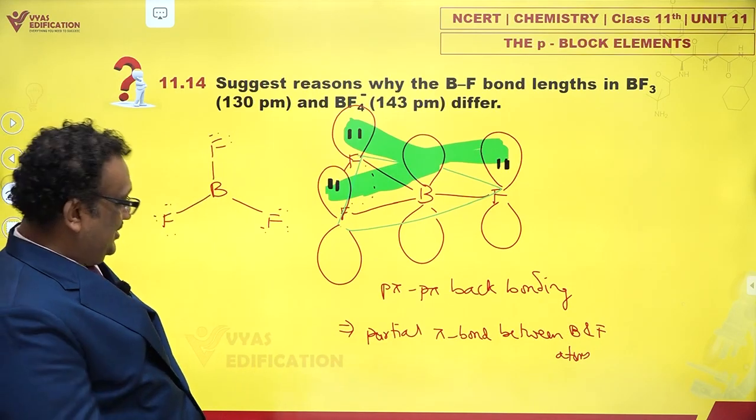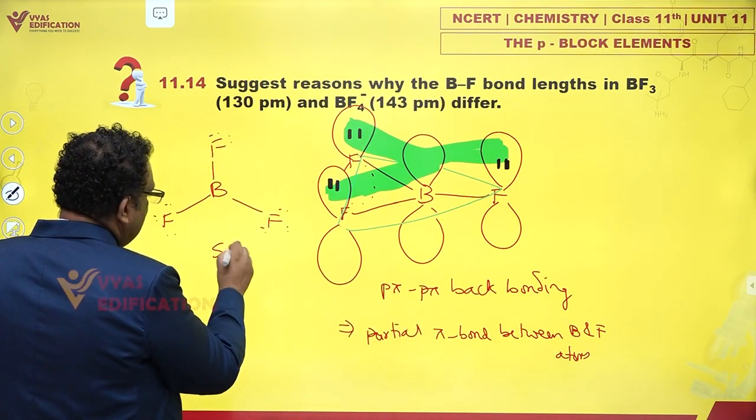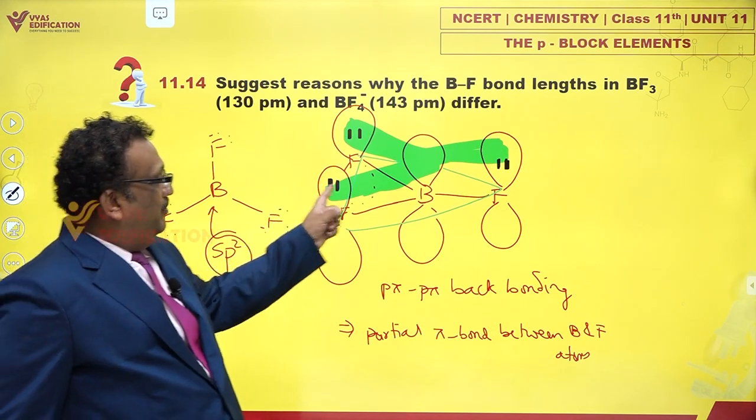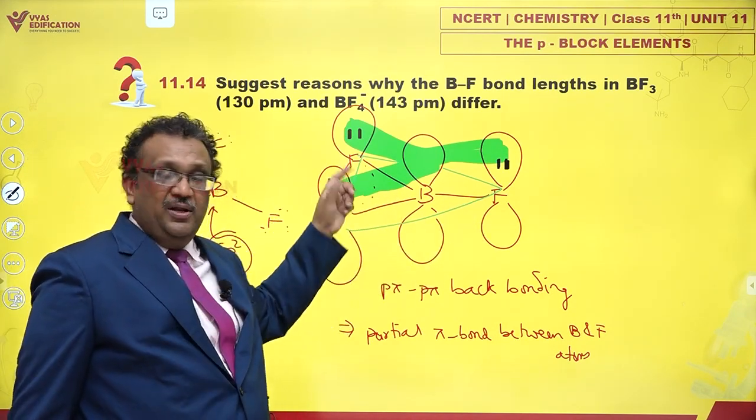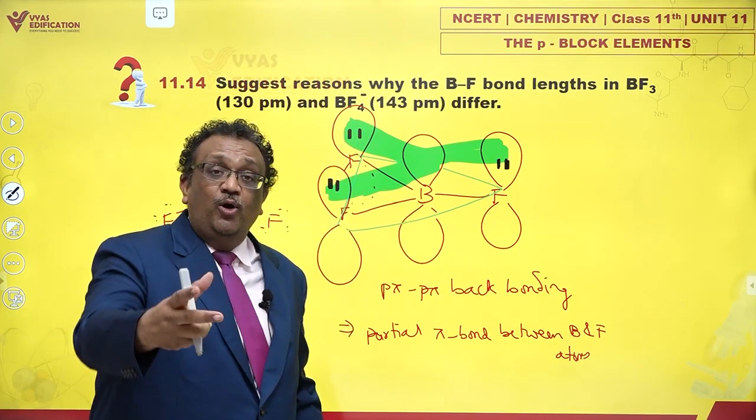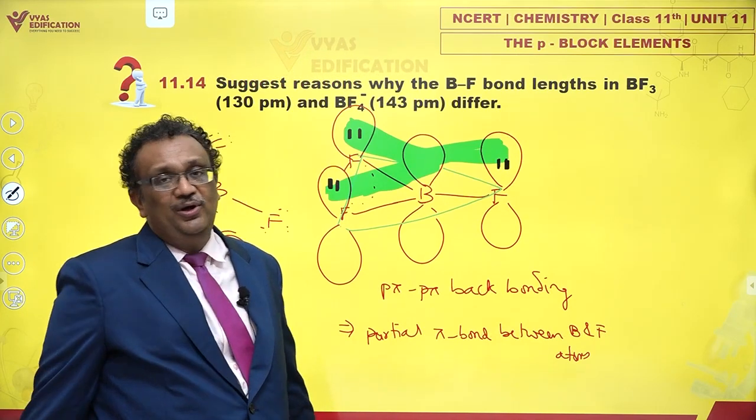First of all, this boron is SP2 hybridized. And this bond order is not just one. Because of this backbonding, the bond order has become more than one. And higher the bond order, shorter is the bond length.